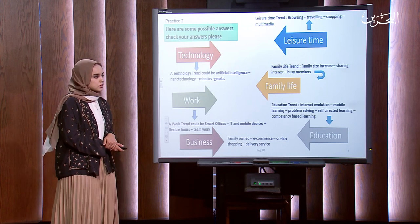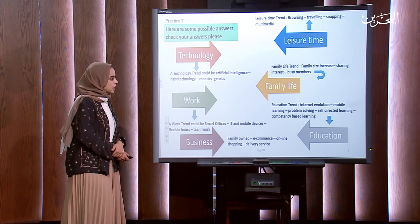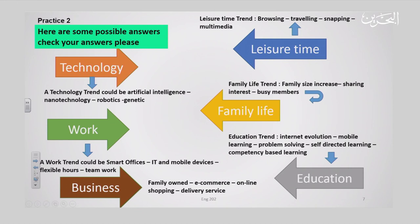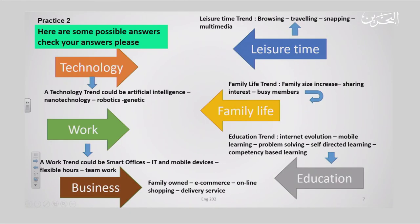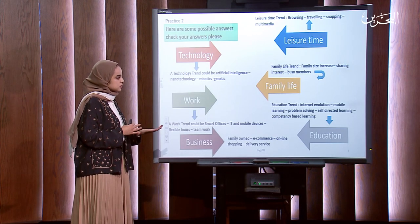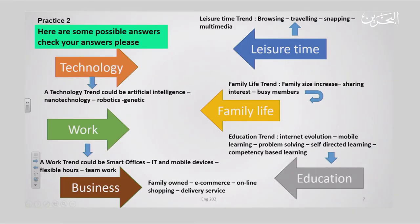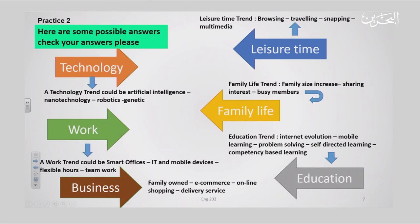Here are some possible answers. In work, we might work later using flexible hours. We might work with mobile devices and also be working in smart offices. For family life, the family size might increase and members may share their interests and businesses. In education, we might see internet evolution, mobile learning, problem solving, self-directed learning, and competency-based learning.